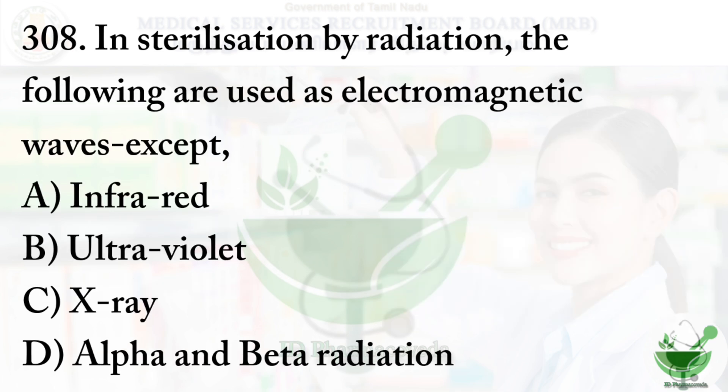Question number 308: In sterilization by radiation, which of the following is NOT used as electromagnetic waves? Option A: infrared, Option B: ultraviolet, Option C: X-ray, Option D: alpha and beta radiation. The correct answer is Option D, alpha and beta radiation. Sterilization is a process that eliminates all kinds of microorganisms.